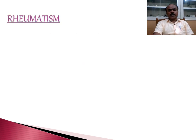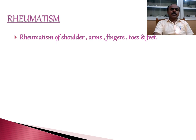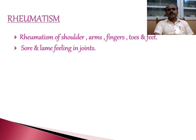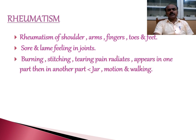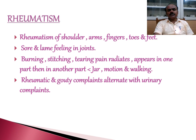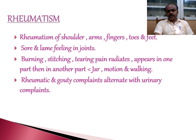Regarding rheumatism, Berberis Vulgaris has a gouty and rheumatic tendency affecting the joints. There is rheumatism of the shoulder, arms, fingers, toes, and feet — a sore and lame feeling in the joints — with burning, stitching, tearing pain that radiates in different directions, appearing in one part then another, aggravated by jaw motion and walking. Rheumatic and gouty complaints alternate with urinary complaints: when the patient passes large quantities of urates in urine, rheumatic complaints are fewer, and when urates are absent from urine, rheumatic and gouty complaints increase.